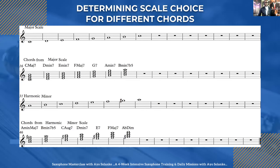Then the F — when you stack the third of the F — that also gives us a major seventh. It gives us a major seventh. That means when you see a major seventh, you can also play your Lydian. And it has a beautiful color as well.